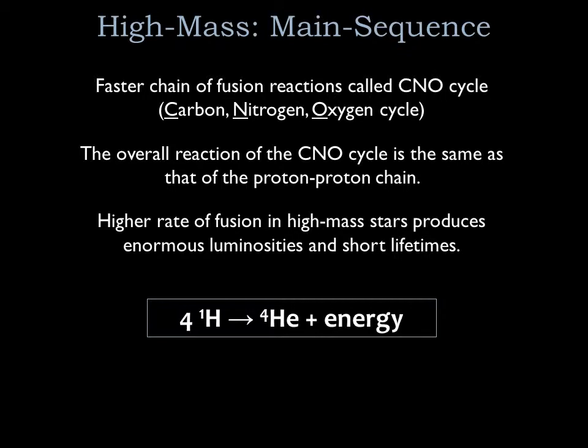The carbon, nitrogen, and oxygen act as catalysts for hydrogen fusion, making fusion proceed at a far higher rate than would be possible by the proton-proton chain alone. This faster chain of hydrogen fusion reactions is called the CNO cycle — CNO stands for carbon, nitrogen, and oxygen. The overall reaction of the CNO cycle is the same as that of the proton-proton chain: four hydrogen nuclei fuse into one helium-4 nucleus. The energy generated per reaction cycle is the same for both, but the CNO cycle reactions happen much faster, leading to the enormous luminosities and short lifetimes of high-mass stars.